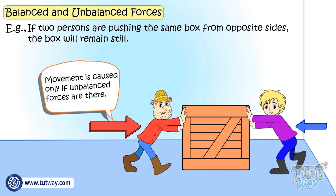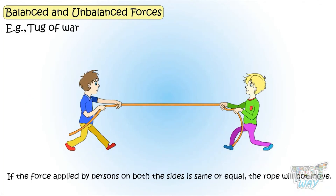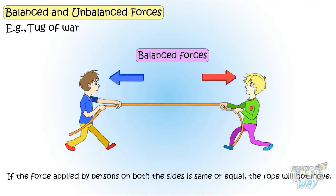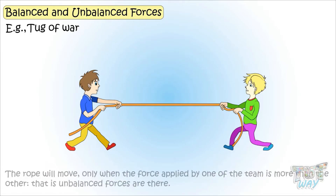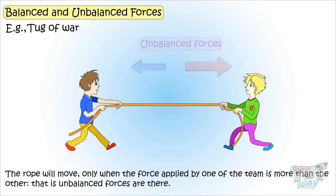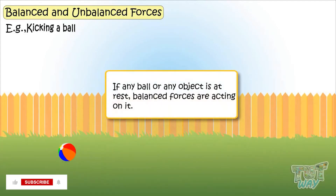Here is another example: in a tug of war, if the force applied by persons on both sides is the same or equal, the rope will not move. The rope will move only when more force is applied by one side of the team than the other — that means unbalanced forces are present.